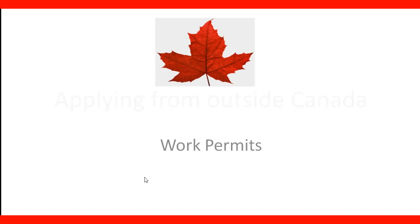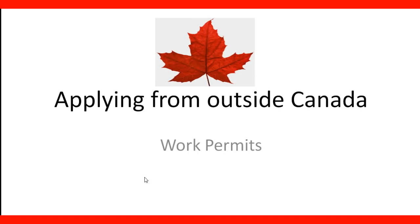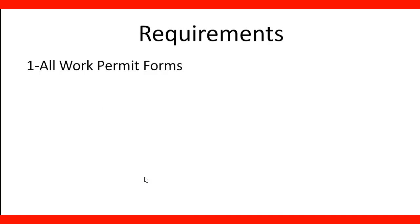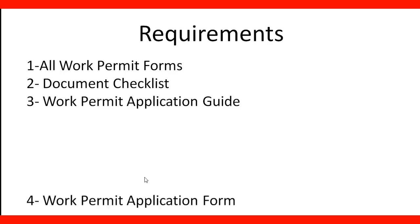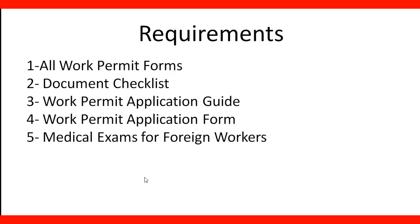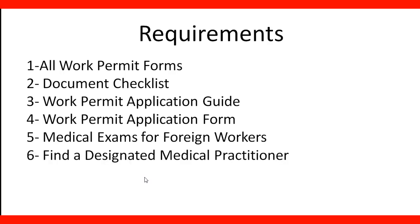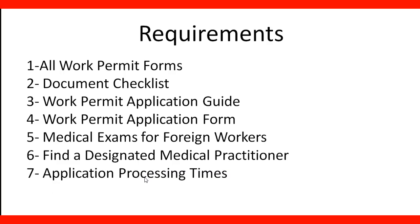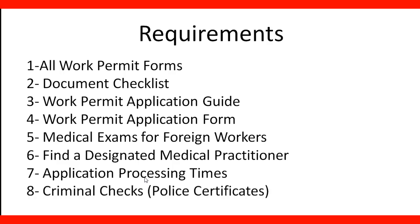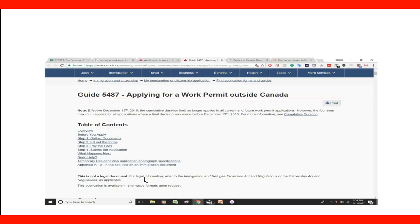Work permits — applying from outside of Canada. In order to apply for a work permit outside of Canada, you will need to get all the work permit forms, the document checklist, and you will need to use the work permit application guide and forms. You will also need to take into consideration the medical exams for foreign workers, find a designated medical practitioner in your country of residence, learn how to get the application processing times, and how to have your criminal checks or police certificate done for immigration.